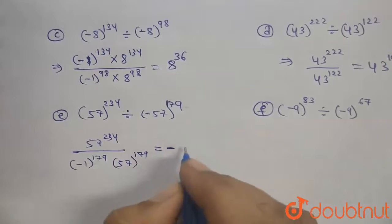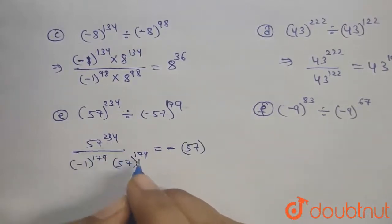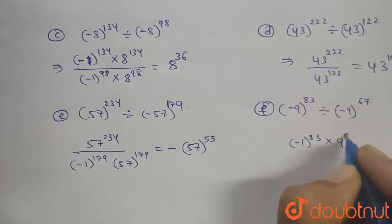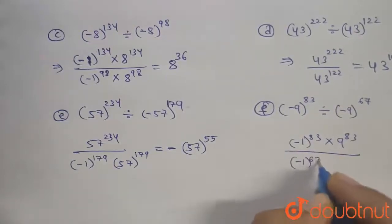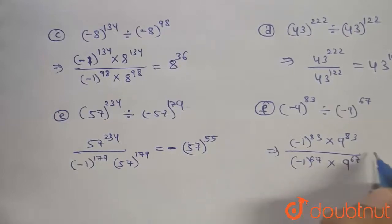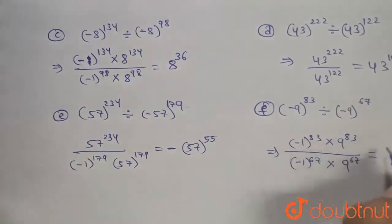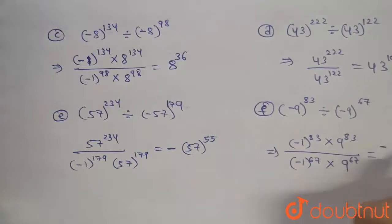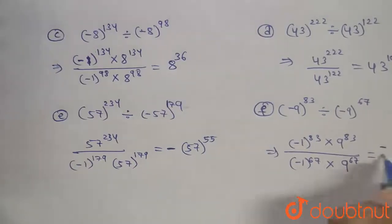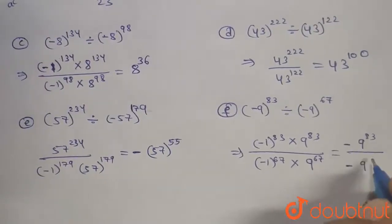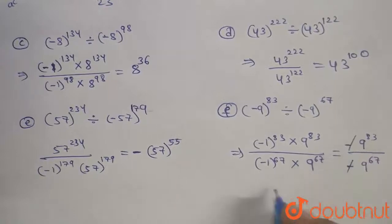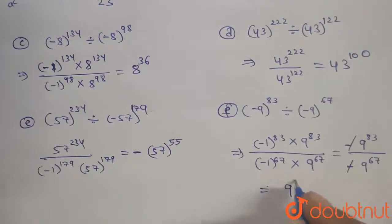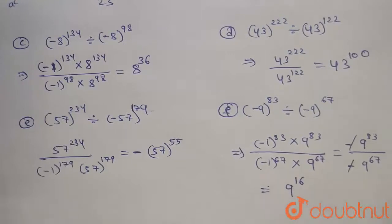Therefore, there will be negative sign with 57 power 234 minus 179 is 55. Minus 1 power 83 into 9 power 83 divided by minus 1 power 67 into 9 power 67. Minus 1 power odd number is minus and minus 1 power 67 odd number is again minus. Minus 9 power 83 divided by minus 9 power 67, minus minus will get cancelled. This implies 9 power 83 minus 67 is equal to 16.